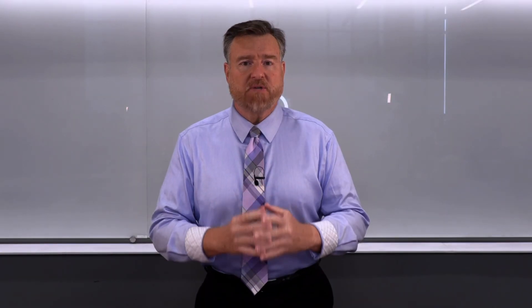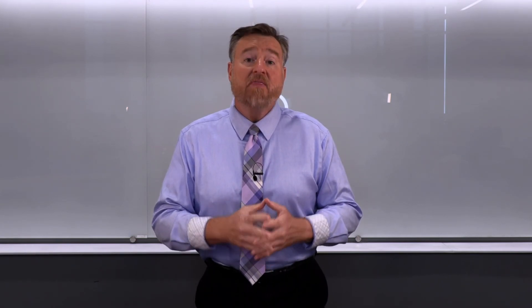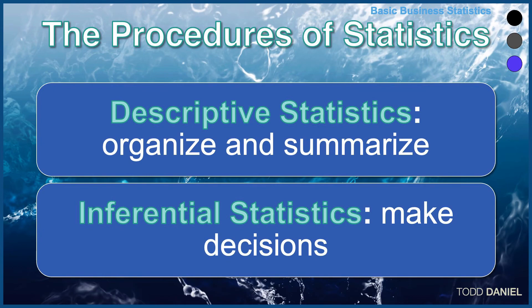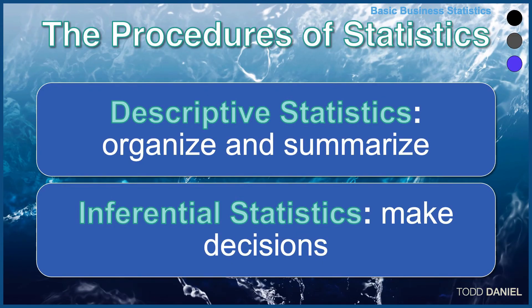A second potential meaning of the word statistics refers to the procedures of statistics. There are two basic procedures we'll be learning in this course. The first is descriptive statistics — exactly what it says: we are describing numbers, describing the central features of those numbers, creating pictures and tables. Then we want to make an educated guess about what is being revealed. That educated guess is called inferential statistics.